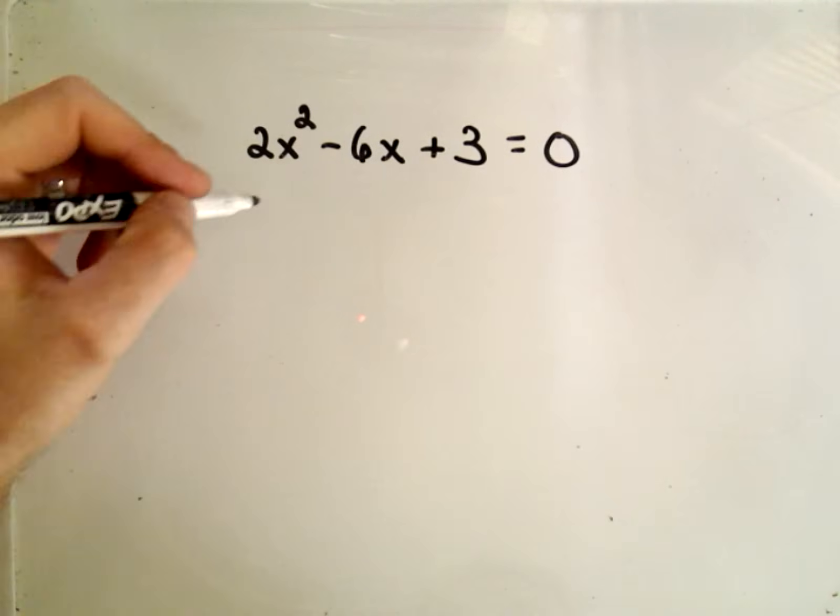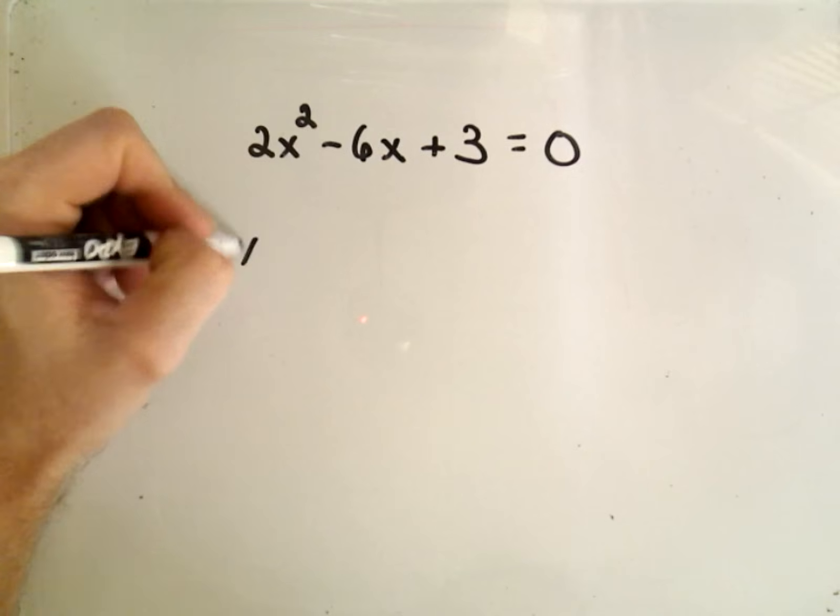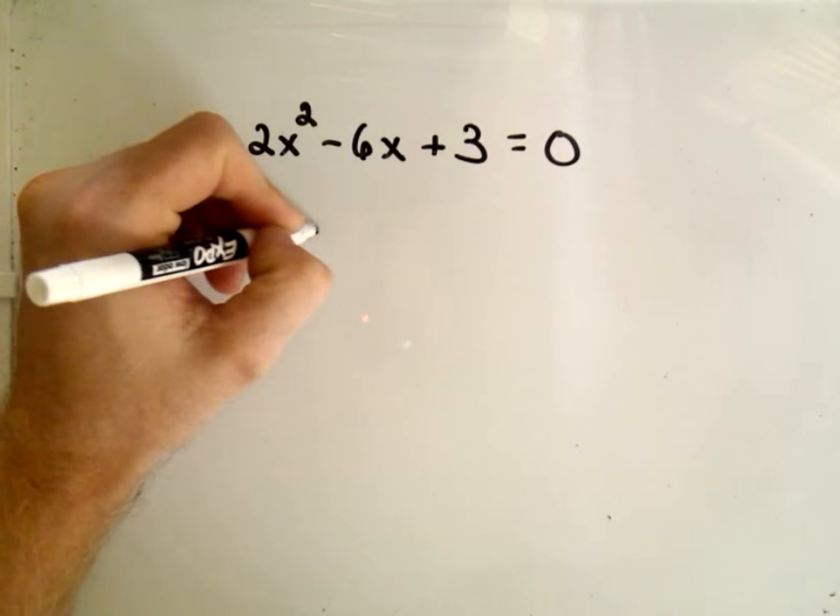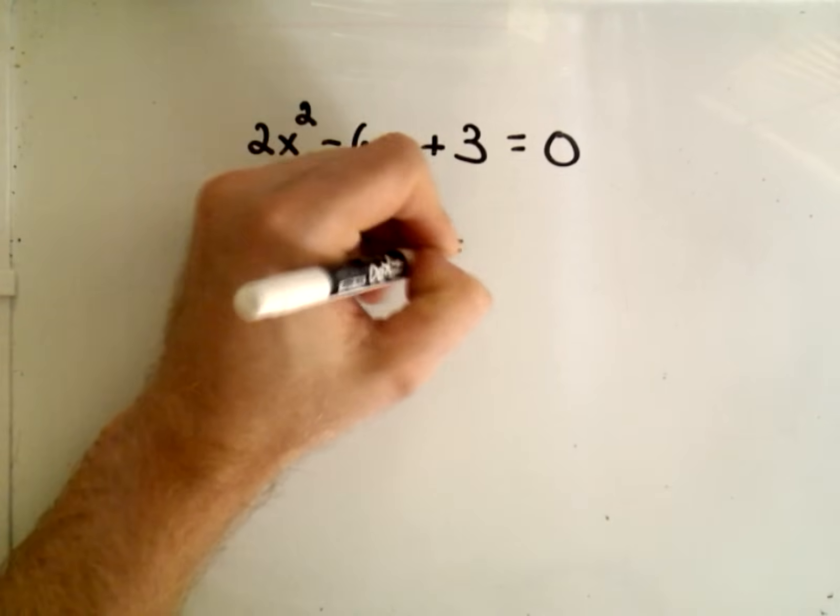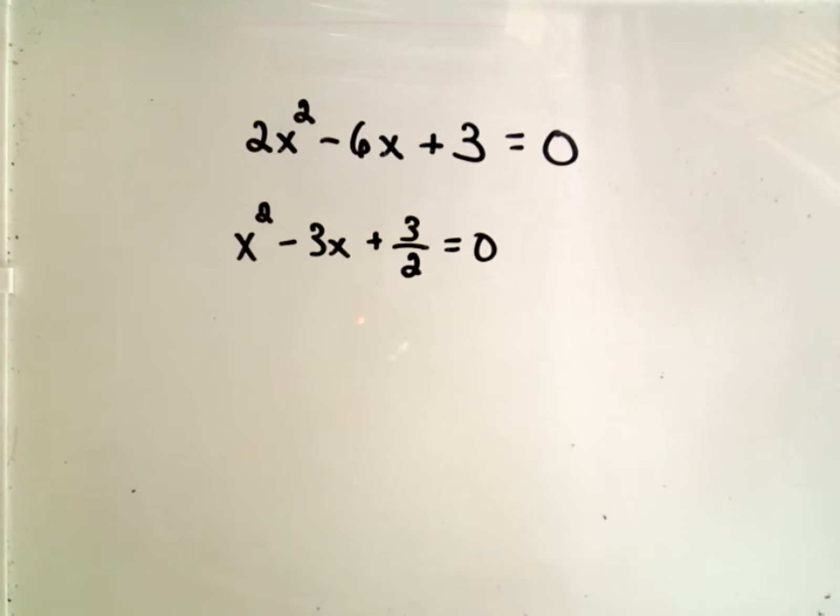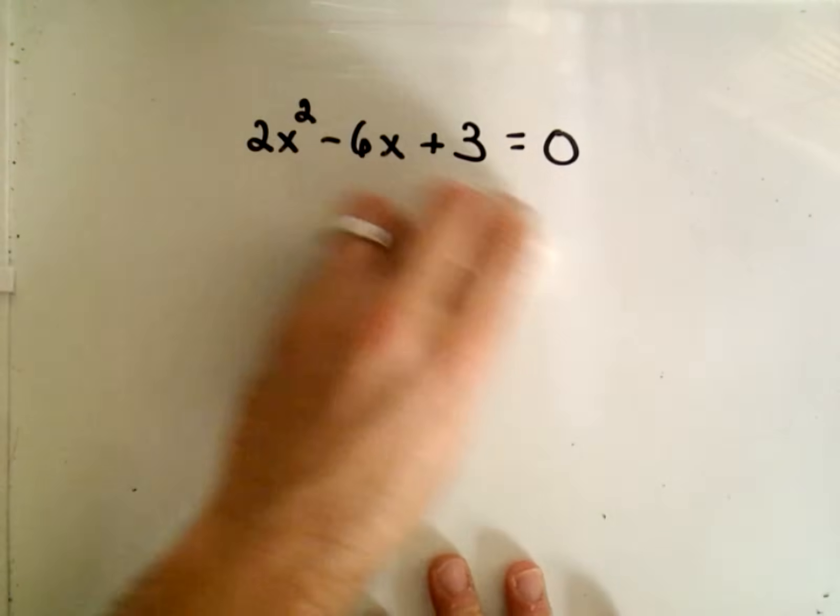The first thing you could do is divide everything by 2 and make it x squared minus 3x plus 3 halves equals 0. And then you could use the same trick that we did before in the previous video. But I'm actually going to do it by factoring.